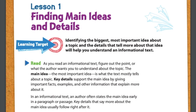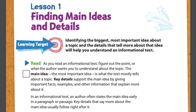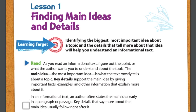Let's look at page 10. Lesson 1: Finding main ideas and details. Our learning target: identifying the biggest, most important idea about a topic and the details that tell more about that idea will help you understand an informational text. As you read an informational text, figure out the point — what the author wants you to understand about a topic. The main idea, the most important idea, is what the text mostly tells about a topic. Key details support the main idea by giving important facts, examples, and other information that explain more about it. In an informational text, an author often states the main idea early in a paragraph or passage, and key details that say more about the main idea usually follow right after.